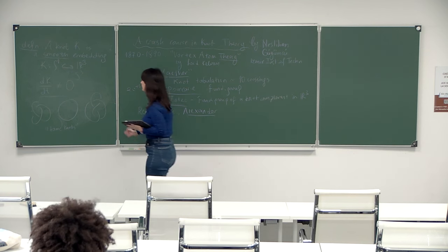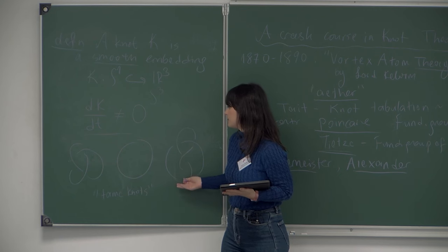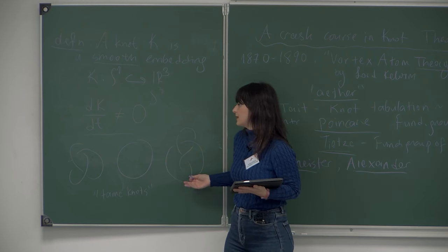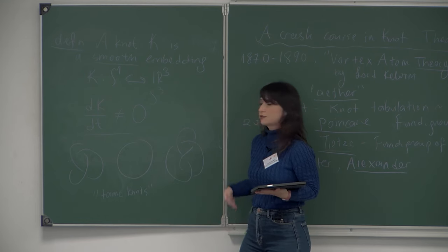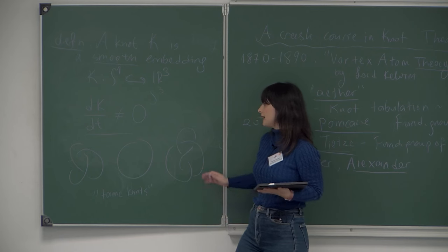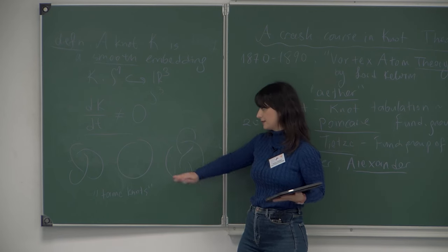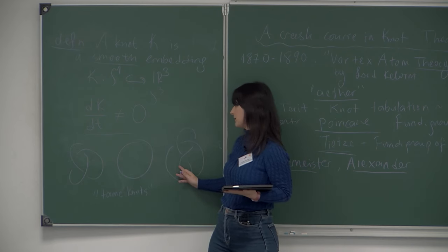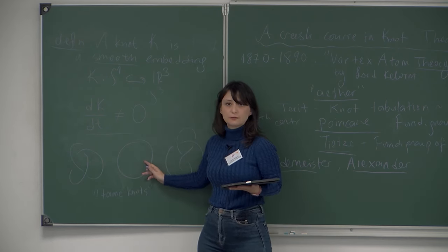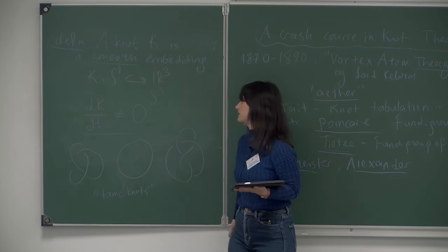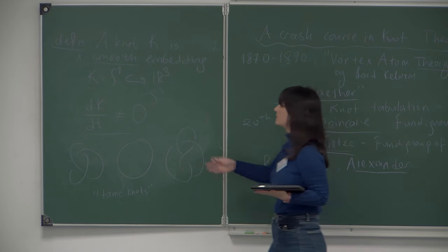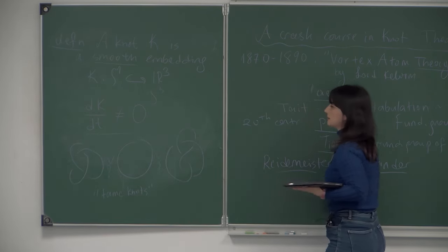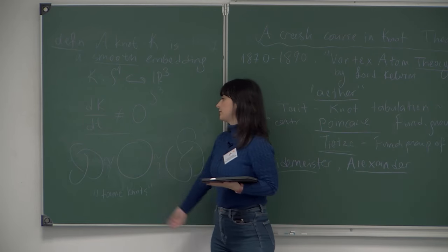We see some different configurations that all look different - but are they really different from each other? In topology we consider objects up to some equivalence relation, such as homeomorphisms, isotopies, or homotopies. In knot theory, the equivalence relation on our knot set is called ambient isotopy. The middle one is the unknot - it doesn't contain any knotting information; it's just the identity image of the unit circle.